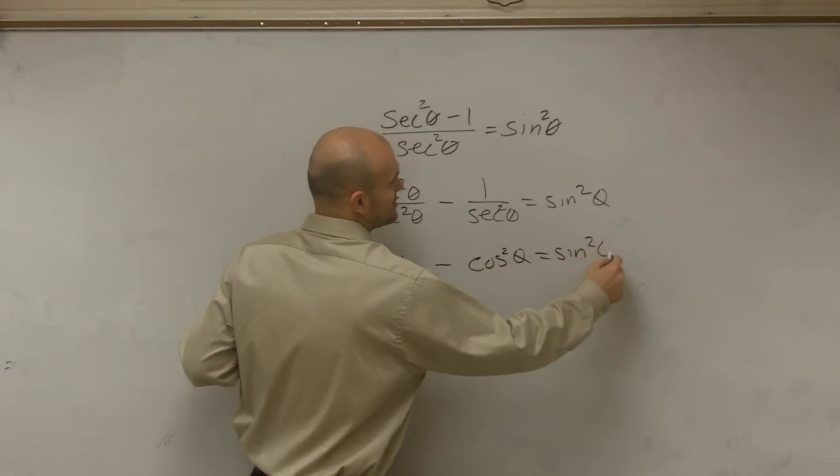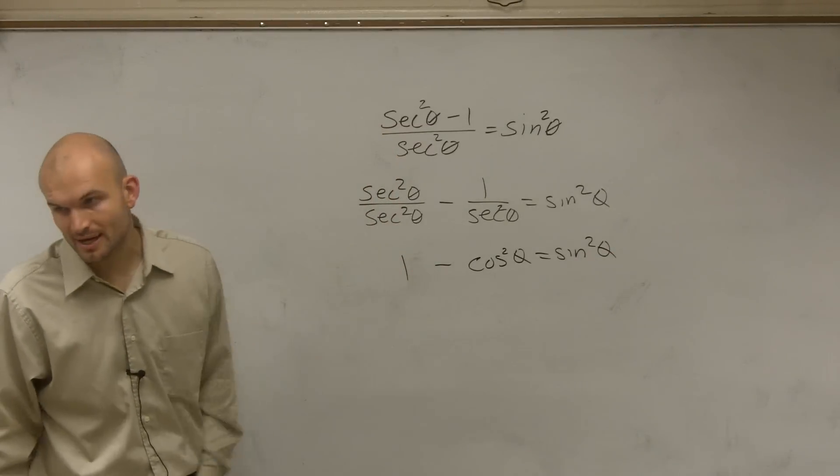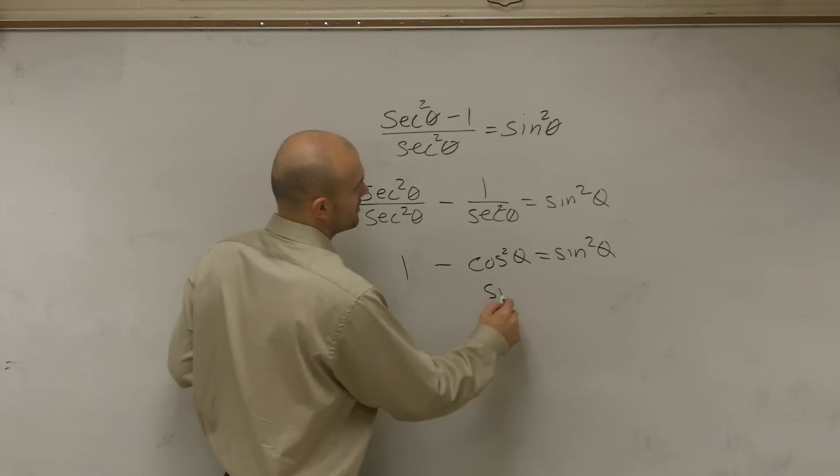And then, by using your Pythagorean identities, we know that 1 minus cosine squared equals sine squared.